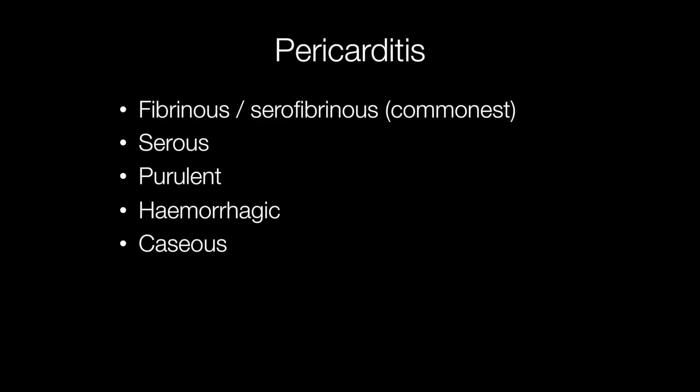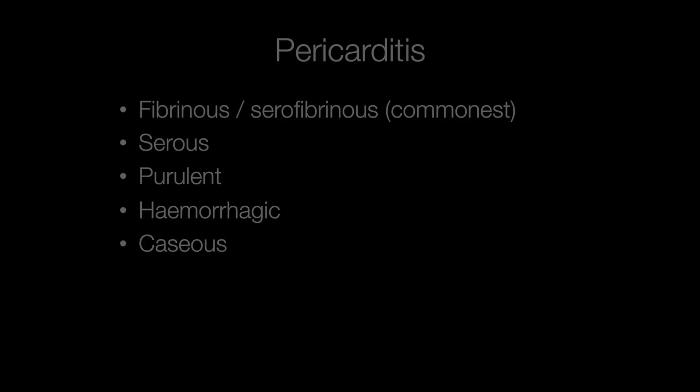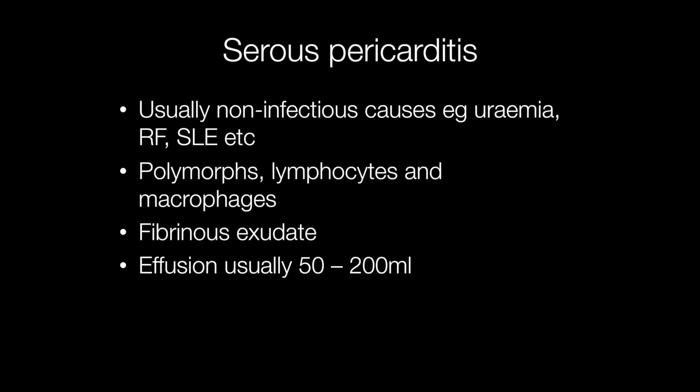Morphologically, pericarditis may be subdivided into fibrinous or serofibrinous (the commonest type), serous, purulent, hemorrhagic, or caseous. Serous pericarditis usually occurs with non-infectious causes such as uremia, rheumatic fever, and SLE. There is a fibrinous exudate and the effusion is usually 50 to 200 mils, containing polymorphs, lymphocytes, and macrophages.